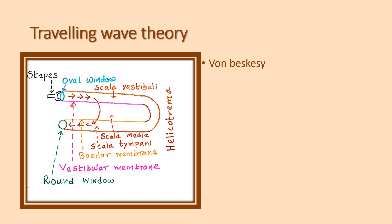Actually, the wave from the oval window hits the vestibular membrane — the pink color layer is the vestibular membrane — and it passes through the basilar membrane to the round window, producing the bulging of the basilar membrane.